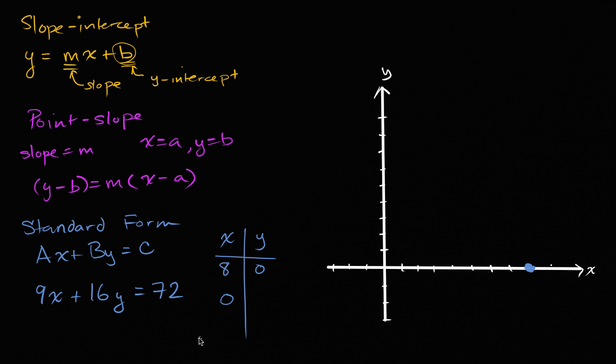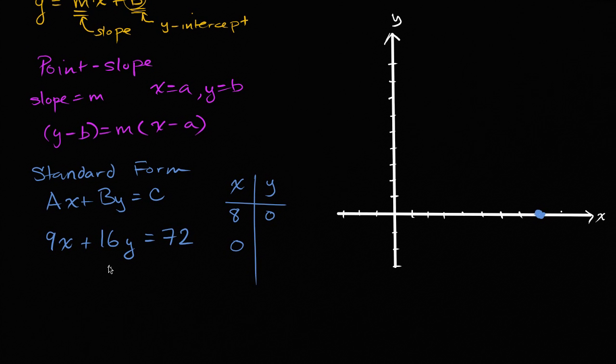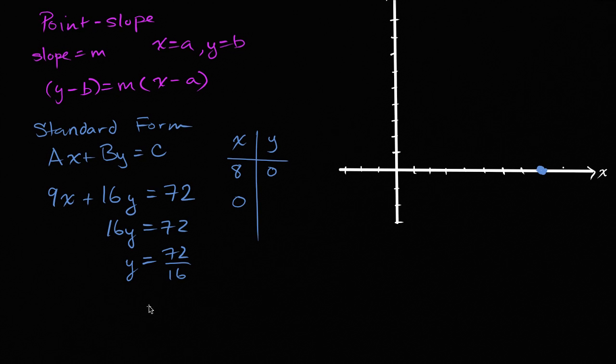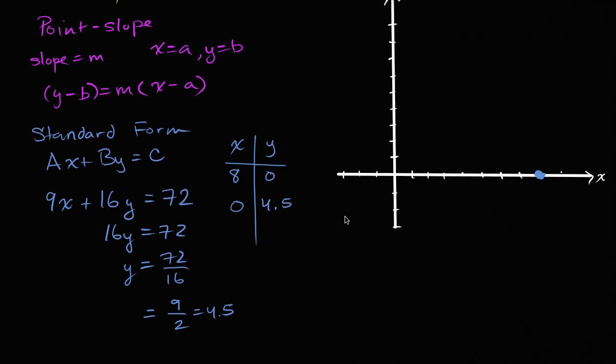Now what about the y-intercept? Well, we said x equals zero. This disappears. And we're left with 16y is equal to 72. So 16y is equal to 72, and then divide both sides by 16. We get y is equal to 72 over 16. They're both divisible by 8, so that's 9 over 2, or 4.5. So when x is zero, y is 4.5.